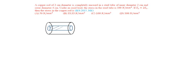A copper rod 2 cm in diameter is completely encased in a steel tube. This is copper and this is steel of internal diameter 2 cm and external diameter 4 cm. Under an axial load, the stress in the steel tube is given as 100 N per mm square.